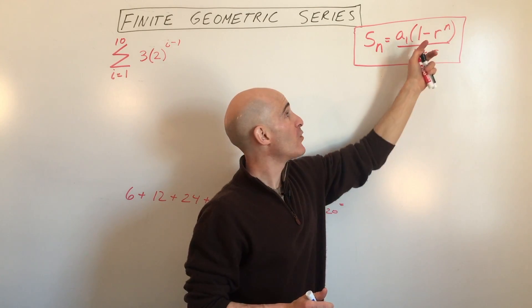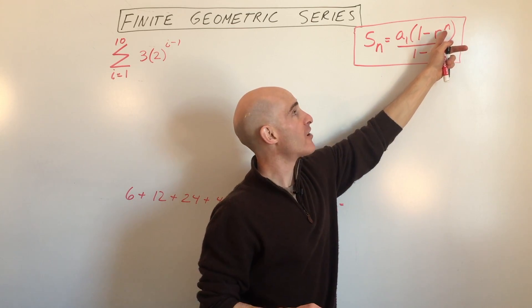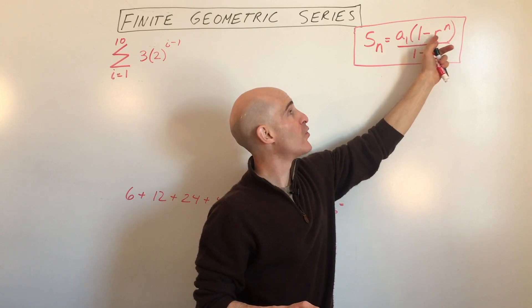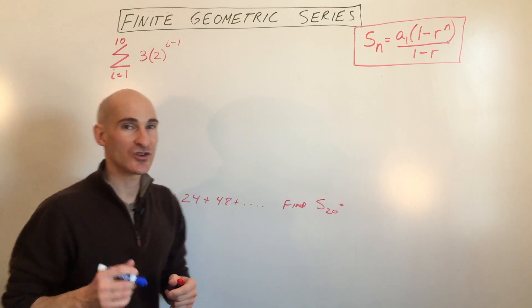Now when you're using this formula, you want to make sure you follow PEMDAS, the order of operations. You want to do the r to the n first and then take 1 minus that. You don't want to do 1 minus r and then raise it to the n. You'll get a different answer. So make sure you follow the order of operations.